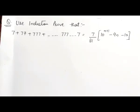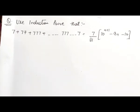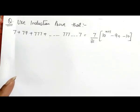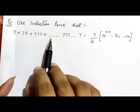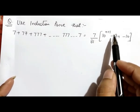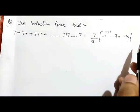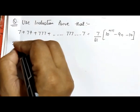Hello friends, today we are going to discuss some more important questions on mathematical induction. In this video, we are going to discuss two questions on induction. Both these questions come in university papers, so this is a very important part. The question is: by using mathematical induction, we have to prove that 7 plus 77 plus 777 plus up to 777...7 equals 7/81 into (10^(n+1) - 9n - 10).